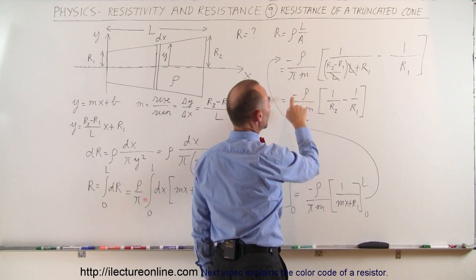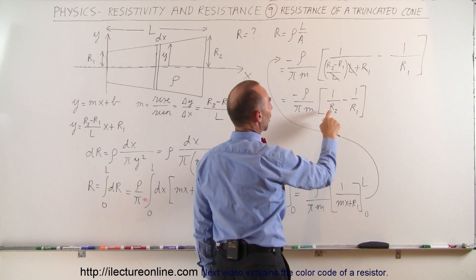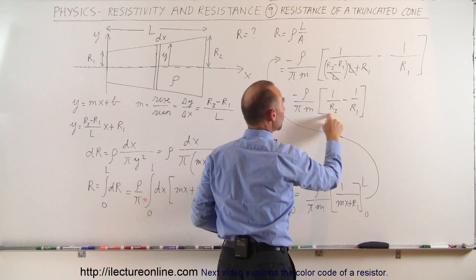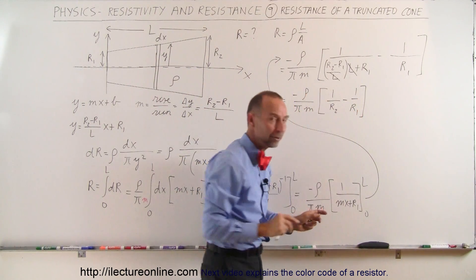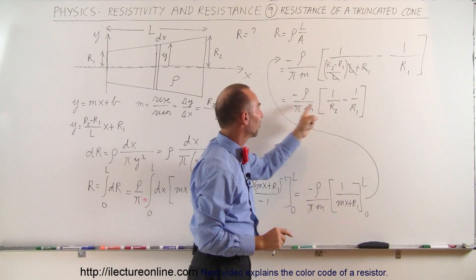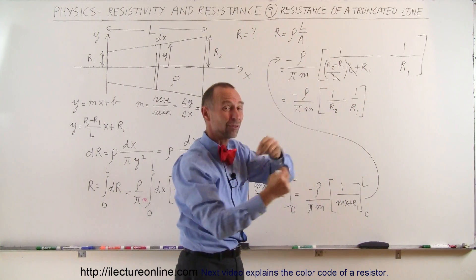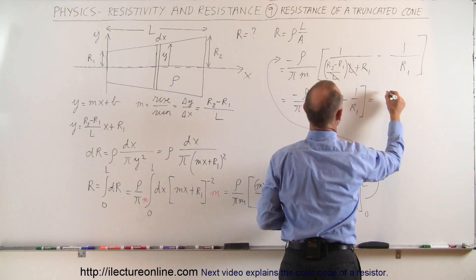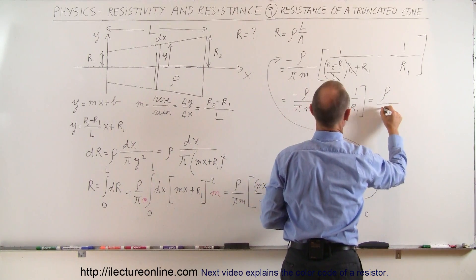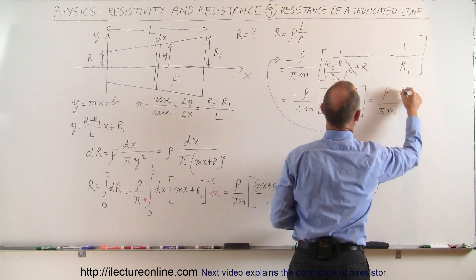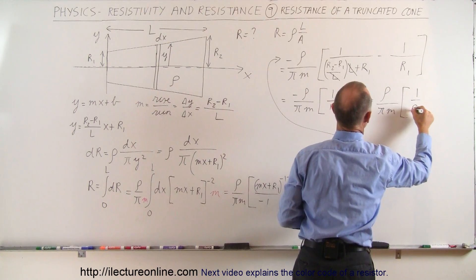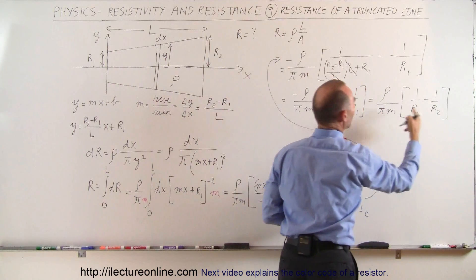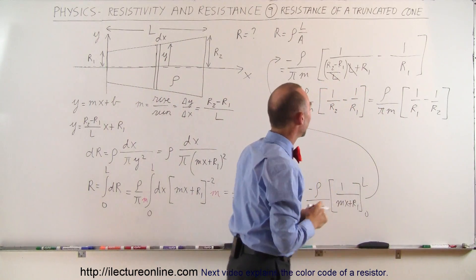Notice we have a negative here — do we need that negative? Well, R2 is a bigger number than R1, so 1 over a bigger number is smaller than 1 over a smaller number, so this quantity (1/R2 minus 1/R1) would be negative. When we apply this negative, we can switch that around and make everything positive, so this is equal to rho divided by (pi times m) times the quantity (1 over R1 minus 1 over R2).